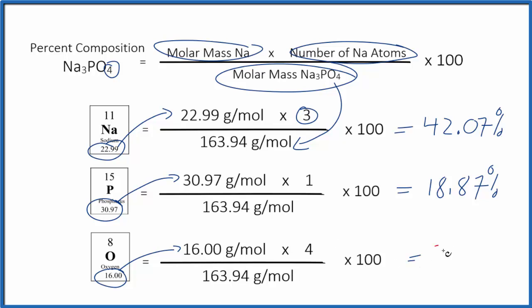Multiply by 100 to get 39.04%. And these percents, they should add up to very close to 100%. This is Dr. B with the percent composition by mass for each element in sodium phosphate. Thanks for watching.